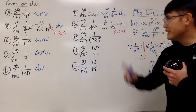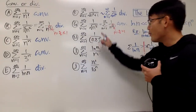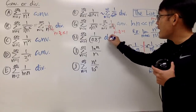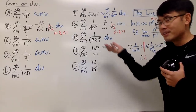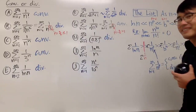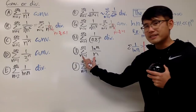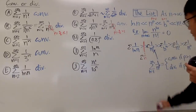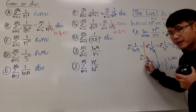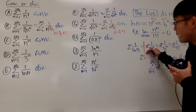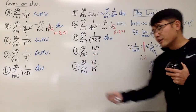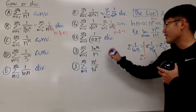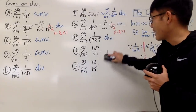The series of 1 over 0.8^n diverges — leave a comment explaining why. For the series of ln(n) over n: the numerator is multiplied by ln(n), so this is bigger than 1/n. Since 1/n diverges and this is even larger, this also diverges.